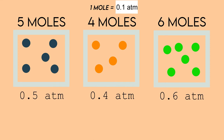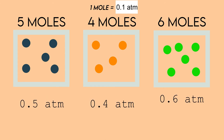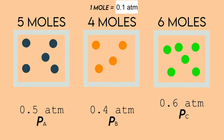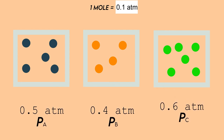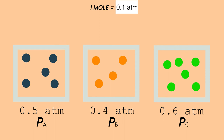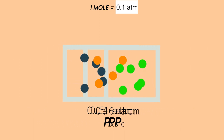Since one mole is equivalent to 0.1 atmosphere, we can say that five moles is equivalent to 0.5 atmosphere, four moles is 0.4 atmosphere, and so on. As you can see, we can denote all these atmospheres as pA for the blue gases, p sub B for orange, and p sub C for the green gases.